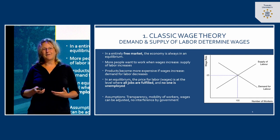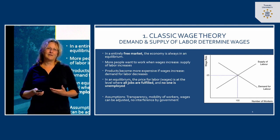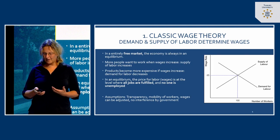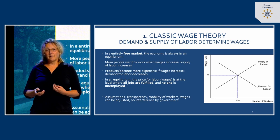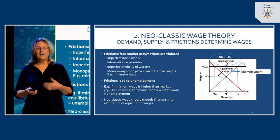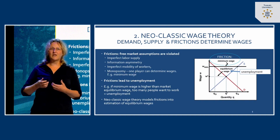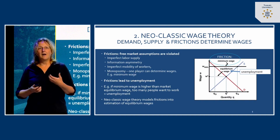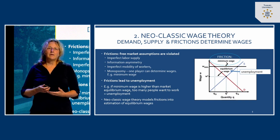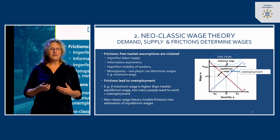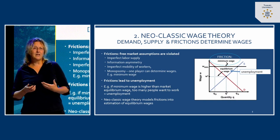By explicating these assumptions, you can already sense this is a theoretical exercise — the real world is rather different. However, classical wage theory is still dominant in a lot of economic thinking. In the newer versions, neoclassic wage theory, there is much more attention for so-called frictions that happen in the labor market — frictions having to do with incomplete transparency and imperfect information.